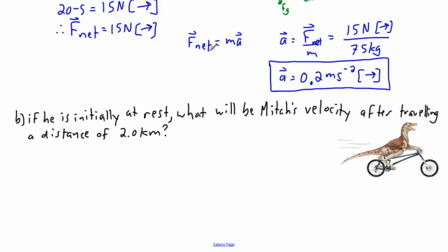Now here comes the next part of the question. This is where we not only use acceleration but also kinematics. So if I'm initially at rest, what will be my velocity after traveling a distance of two kilometers? Because I'm accelerating, I need some equations of accelerated motion.